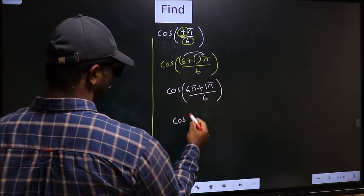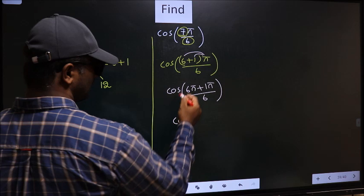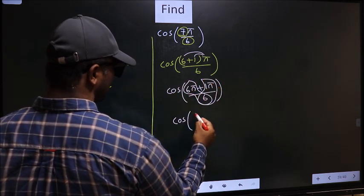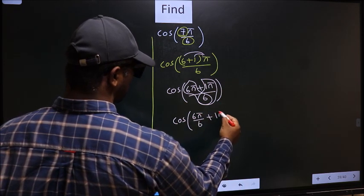Now cos. Now you should split the denominator in this way: that is 6π by 6 plus 1π by 6.